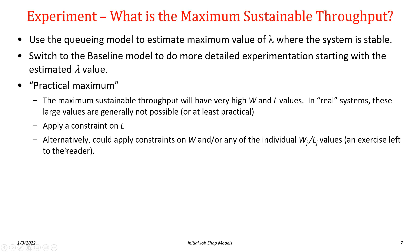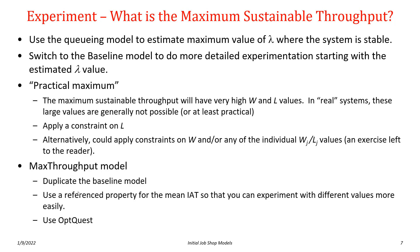We want to define a practical maximum by applying a constraint on L — the average number in system. We want maximum throughput such that L doesn't exceed a particular value. We could similarly constrain W or individual station WIP values. We'll demonstrate this simple constraint and run a Simio experiment with OptQuest to solve the optimization problem.